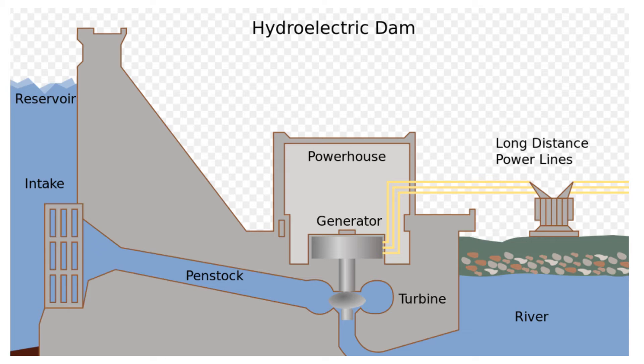This diagram shows the parts of the hydroelectric power plant. The left side is the dam or the water reservoir, then the turbine and generator in the powerhouse, and the transmission represented by the long distance power lines.